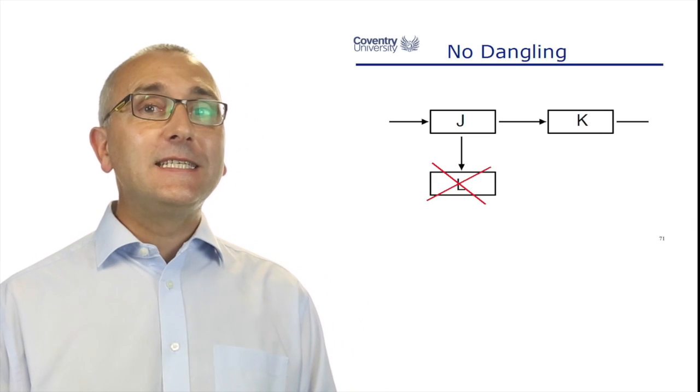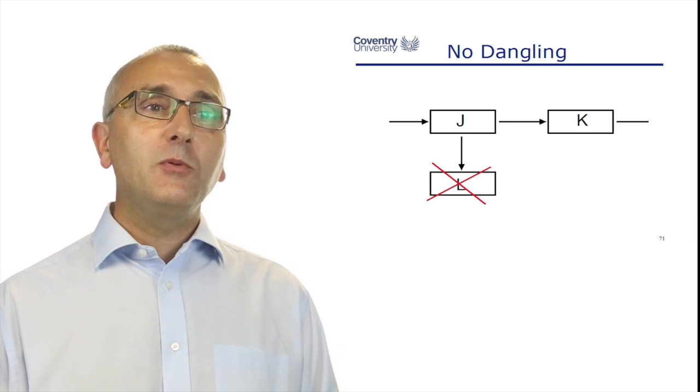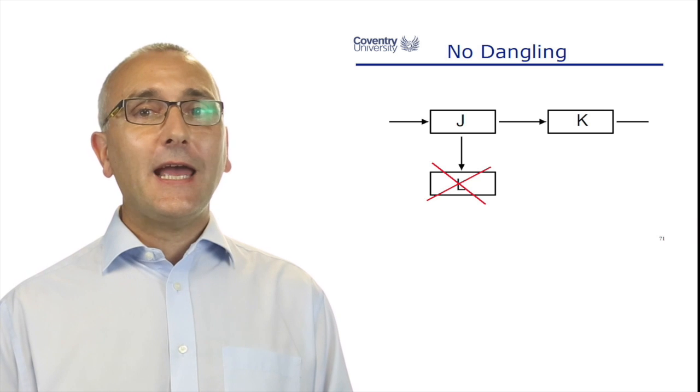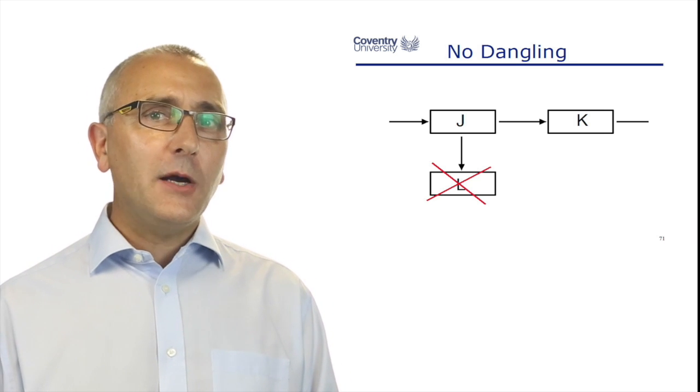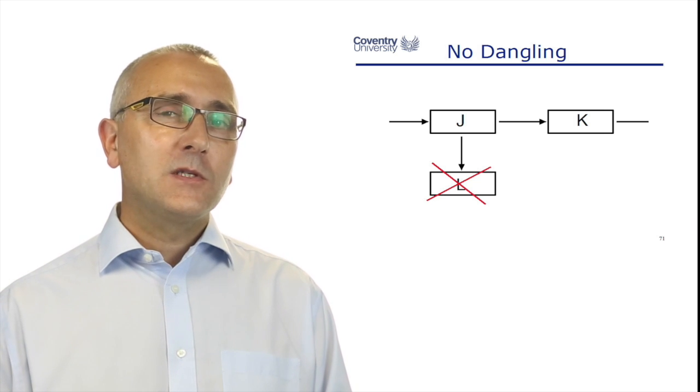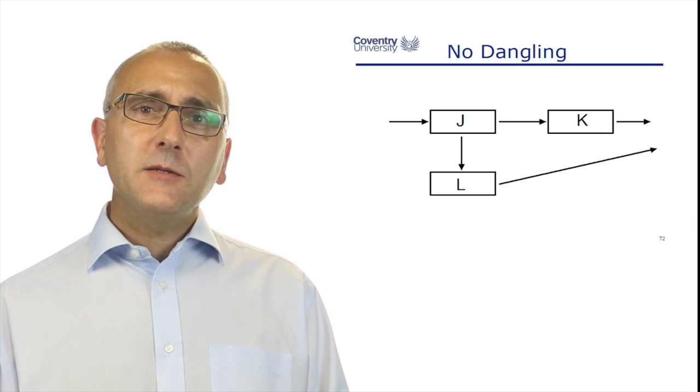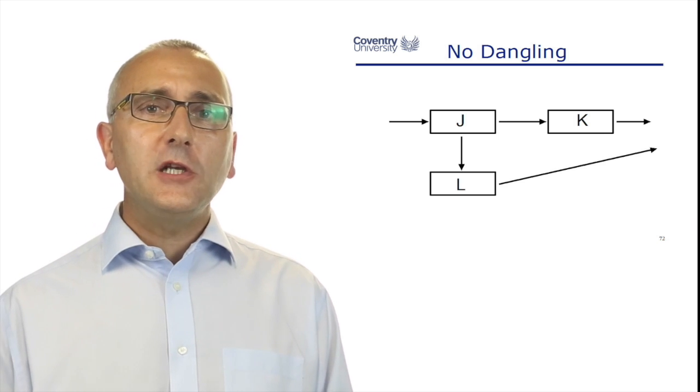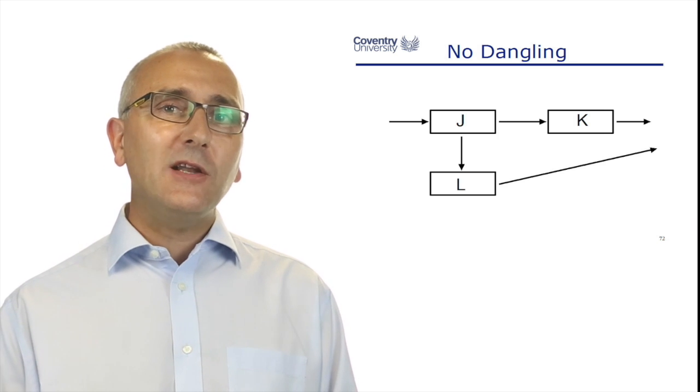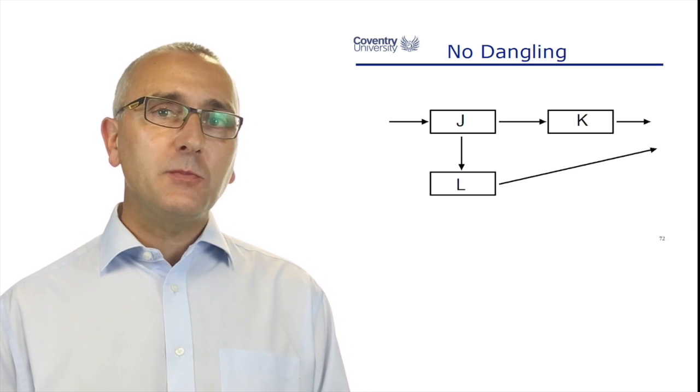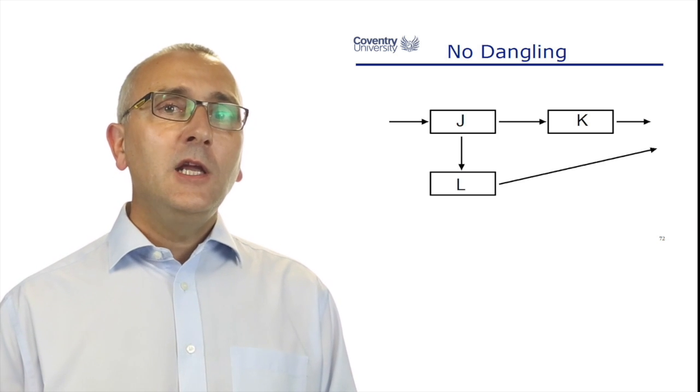The second rule is we can't have things dangling. Everything must go somewhere. In this example, when J is finished we can start K, and when J is finished we can start L. But L isn't going anywhere, so why are you doing it? Nothing's dependent on it. Then somebody says, well, we have to do L. Usually you've forgotten that L leads into something else. We can't do this until L has been approved as finished. So no looping, no dangling.